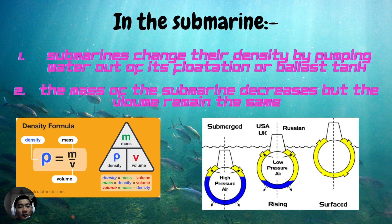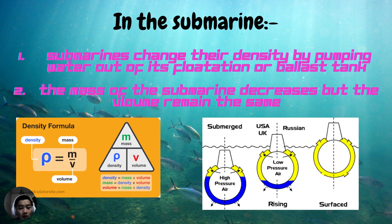In the submarine, the first point is that submarines change their density by pumping water out of their ballast tanks. The mass of the submarine decreases but the volume remains the same — volume is a constant value. When the mass decreases, the density also decreases, because density and mass are directly proportional.